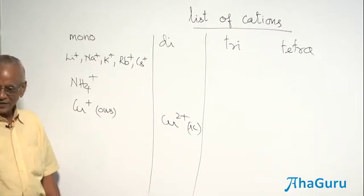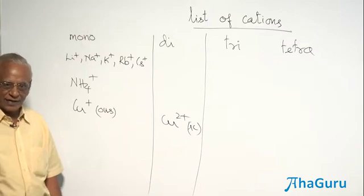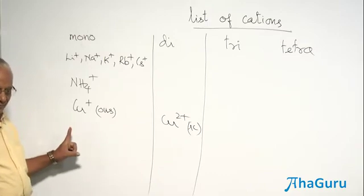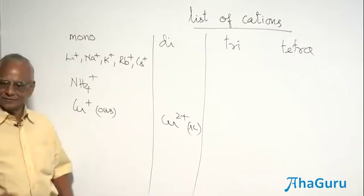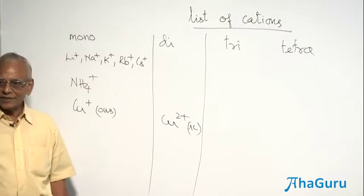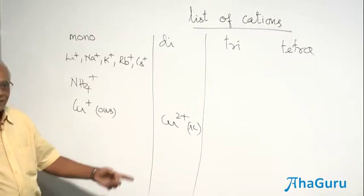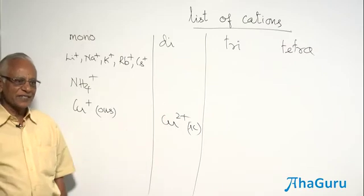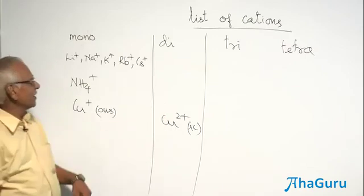Now, for example, I ask you to write the formula of cuprous chloride. Valency is 1, CuCl. I ask you to write cupric chloride. CuCl2. That is all, very simple, isn't it? Cupric chloride.